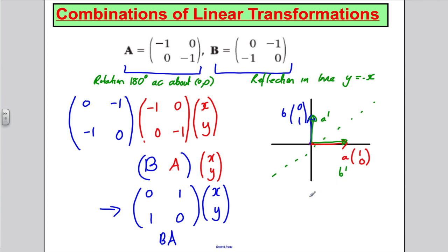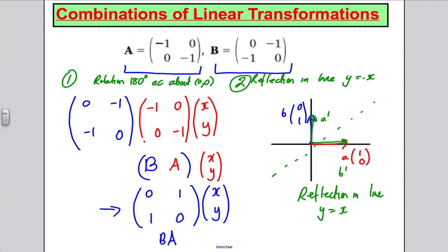What transformation is that? It must be a reflection in the line y = x. So if I want to know the result of doing a rotation 180 degrees anticlockwise about (0, 0) and then reflecting in y = −x, the combined effect is a single transformation: a reflection in the line y = x. And I got that by multiplying both matrices.